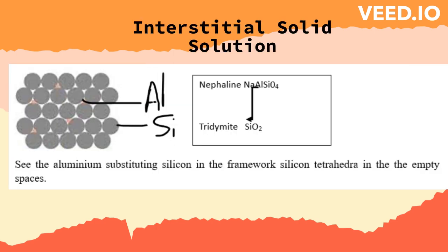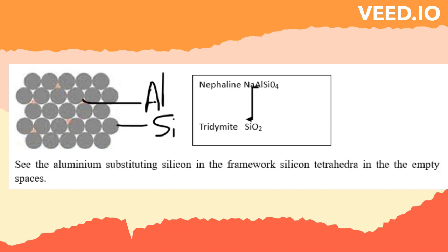Interstitial Solid Solution: In some crystal structures there are sites that are not normally occupied by ions. These are considered voids or empty spaces. However, when an ion does occupy one of these voids it is called interstitial solid solution. In interstitial solid solution, cations are inserted into sites not normally occupied in the structure. For example, a solid solution between tridymite and Nepheline (sodium-aluminum silicate) is achieved by stuffing sodium into channel sites and substituting aluminum for silicon in the framework.